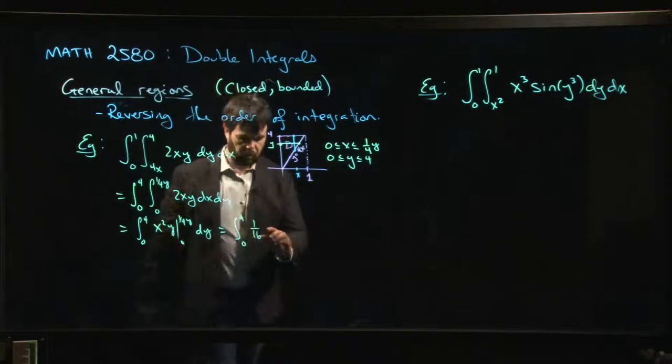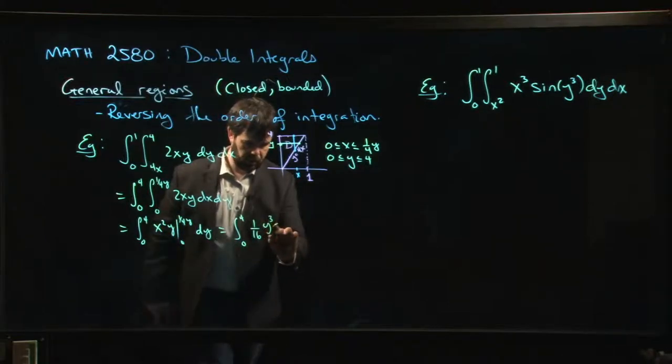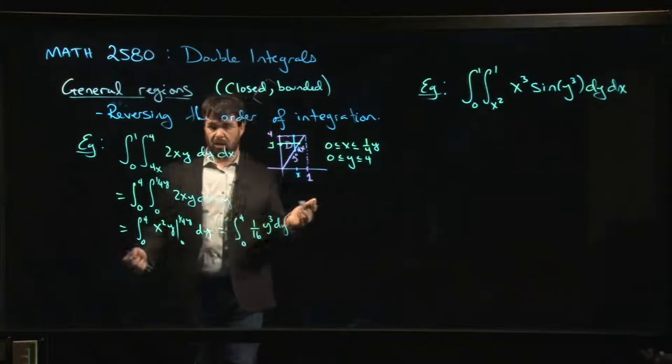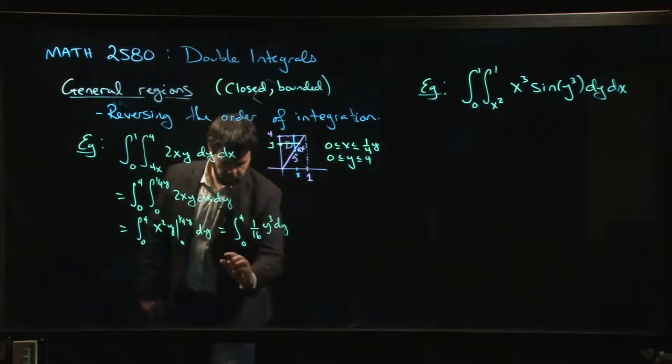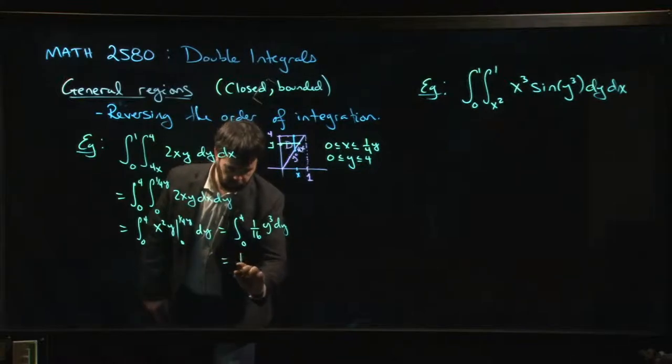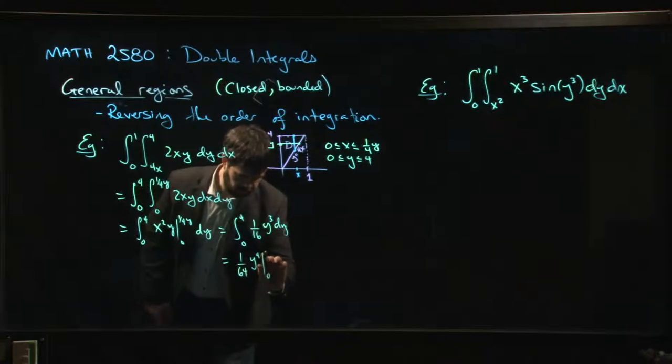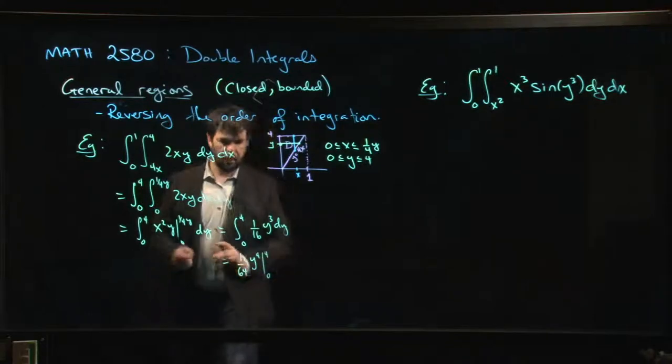The upper limit, one quarter y goes in for x², so one quarter squared is one over 16, y² times y, so one over 16 y³. And now it's the calc one integral, we know what to do. y to the fourth over four from zero to four.